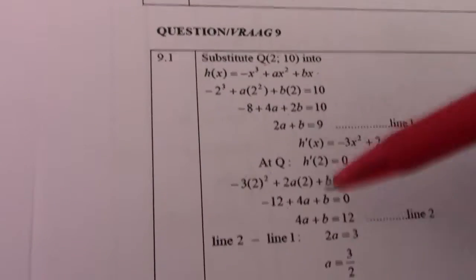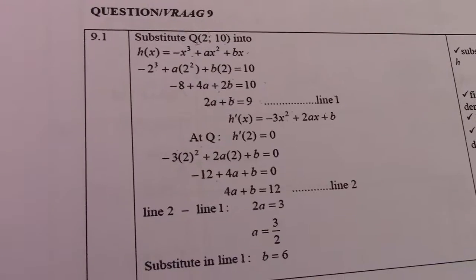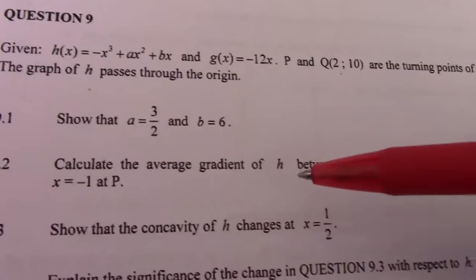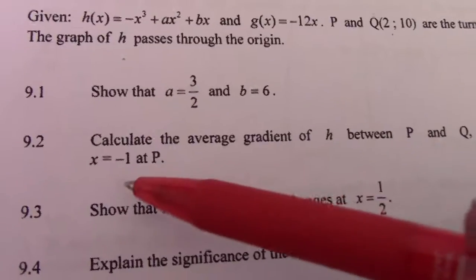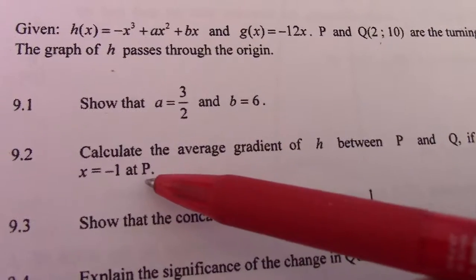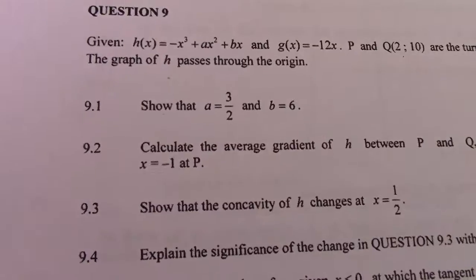So I hope you follow and understand. This is one of many ways we ask you to find the equation of a cubic function. Next, in 9.2, we'll calculate the average gradient of h between P and Q if x = -1 at P. All the best. God bless. Bye.